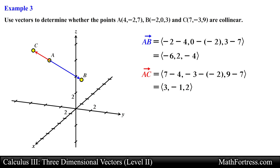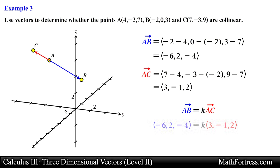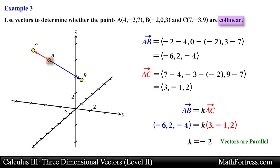Now if both vectors lie on the same line they should be parallel to one another, so we need to show they are a constant multiple of each other. By inspection we can obtain vector AB by multiplying vector AC by negative 2. Since both vectors are parallel and pass through the same point — in this case point a — we can conclude that the points are collinear.